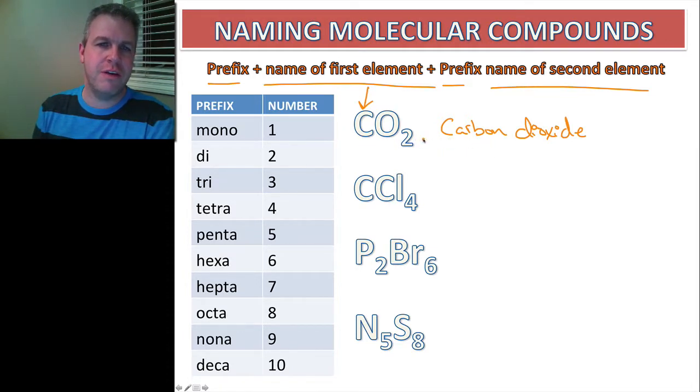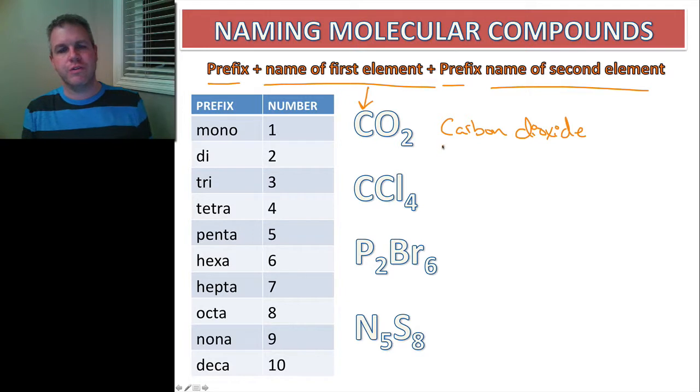The very first one we leave blank if it's all by itself. If it's di you'll see that later on when we get down here, we're going to list it, but in this one we're just going to call it carbon and then of course dioxide, and we always use the name of the anion when we name these.